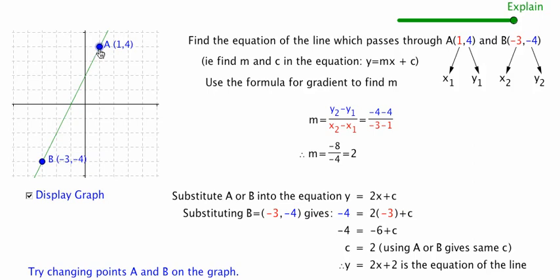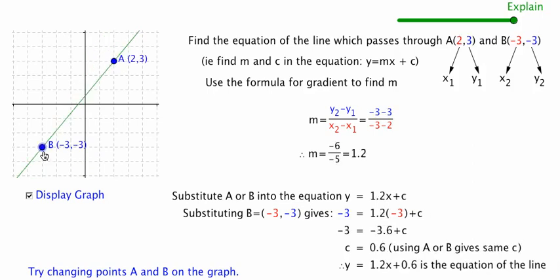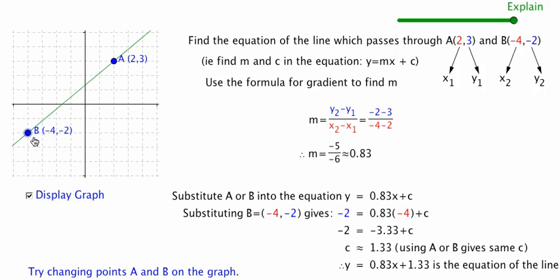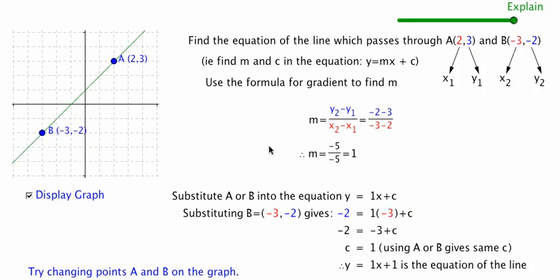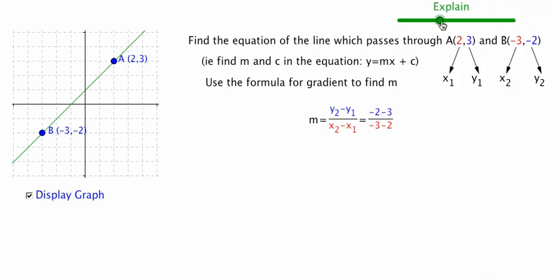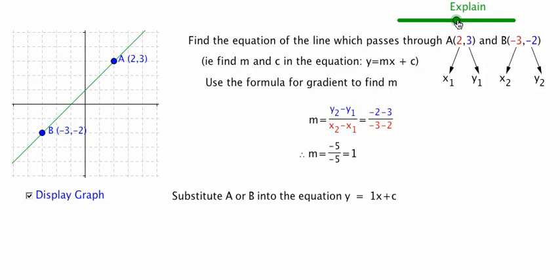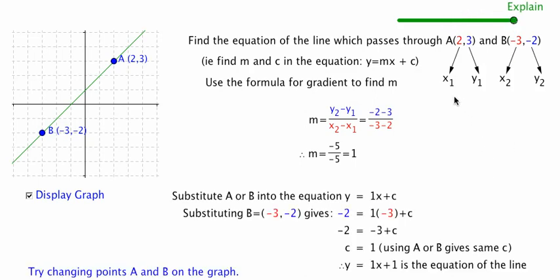We can also change the values of the A and B points and see that the working updates as we do that. Here I've made a line with a slope of 1 and a y-intercept of 1. This method works for any two points: calculate the gradient first, then substitute one point into the equation to find c. With both m and c found, we have the equation of the line.